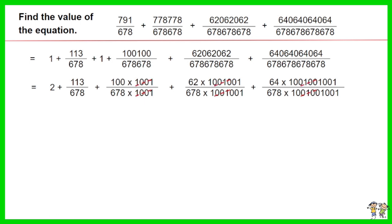The same value in the numerators and denominators cancel each other out. The sum of the remaining fractions is 2 and 339 over 678. The answer is 2 and a half.